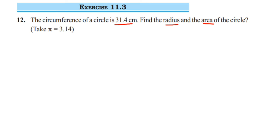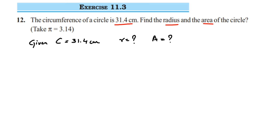Let's write down what is given in the question. They have given the circumference, denoted by capital C, so C is equal to 31.4 centimeters. First we have to find out the radius, and using the radius we're going to find out the area of the circle. Since we know only the circumference, we're going to use a formula.